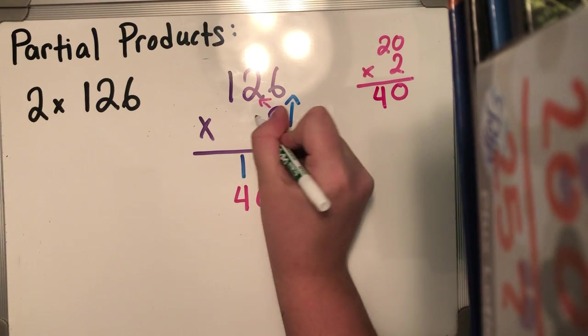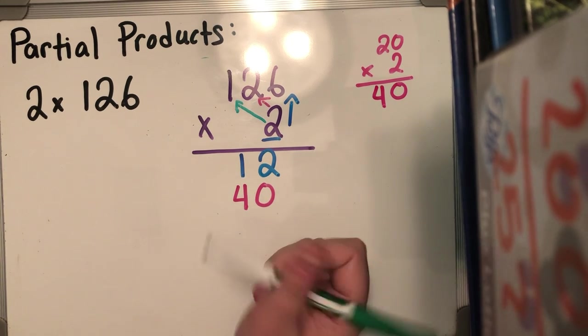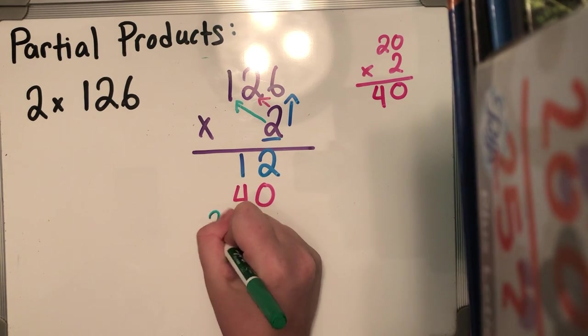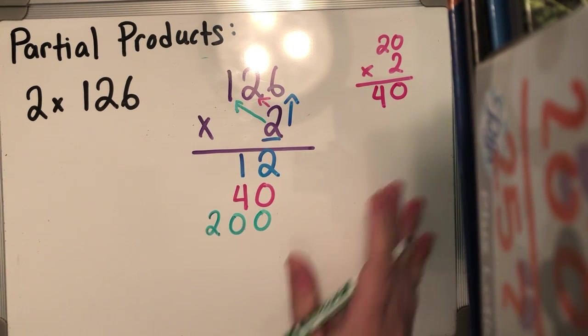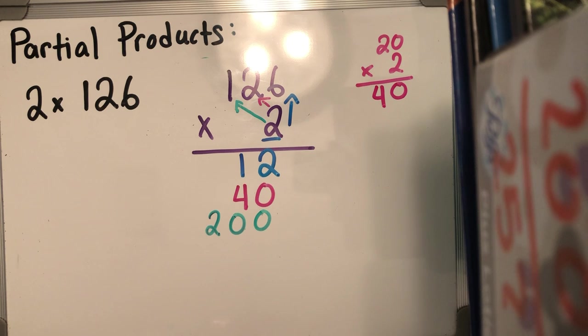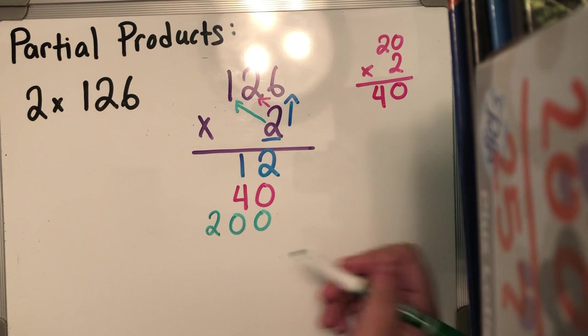Now I'm gonna go across all the way to the hundreds now. Two times 100. I know for a fact that two times 100 is gonna be 200. Now I'm gonna write that down. There's no need for me to practice anything over here because I know that two times one is two, and in the hundreds place I have two extra zeros, so I'm just gonna add those zeros to the end of it.